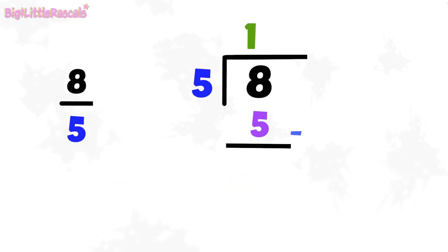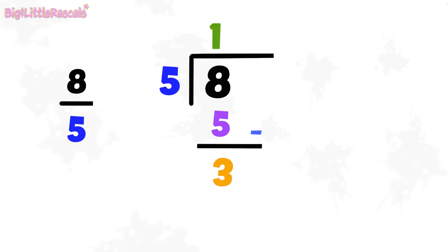Eight minus five equals to three. This number three is the residue or remaining balance that can't be divided anymore by number five. So, guys, how to write the mixed numbers?